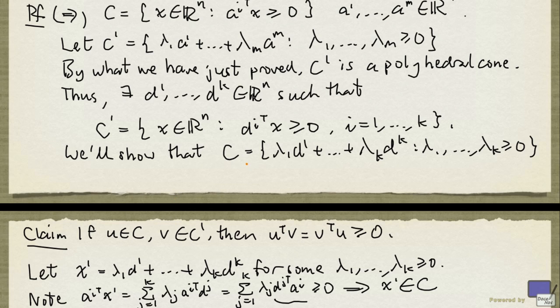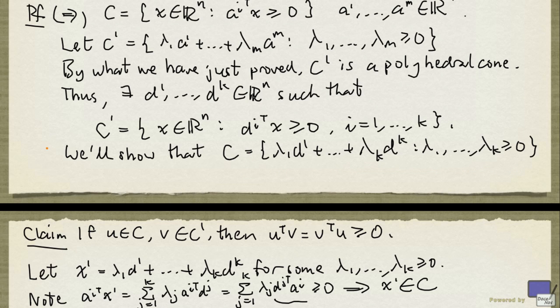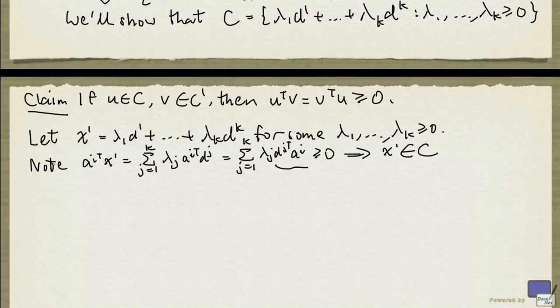So what that means is, we have shown that C contains this set over here. Now we need to show the reverse inclusion. And we'll do this by contradiction.